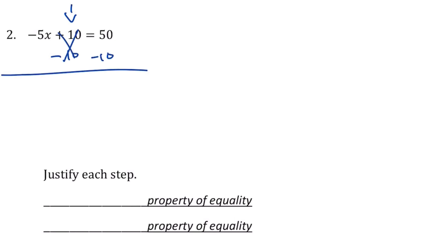When I do that, I get -5x = 40. And then I'm going to divide by the coefficient of -5, and I'm left with x = -8.